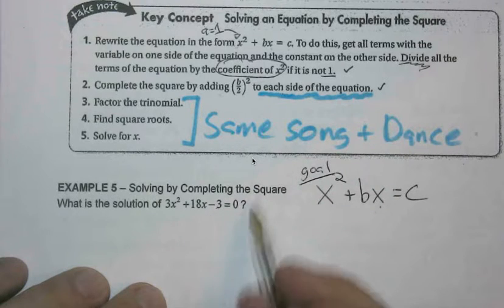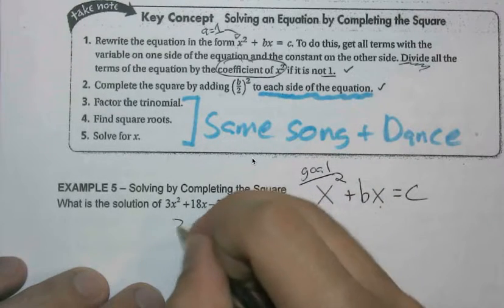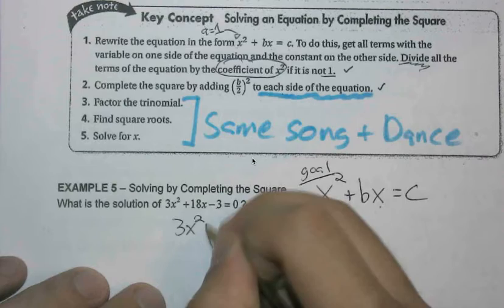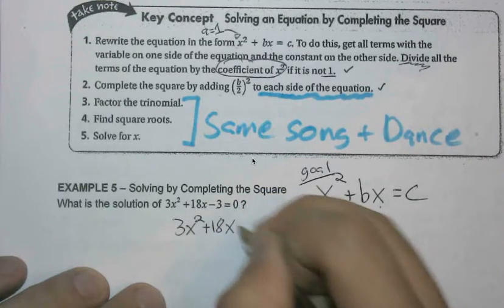So hopefully you're saying that you would move the 3 over to the other side, getting you here. 3x squared plus 18x, where this now equals 3.